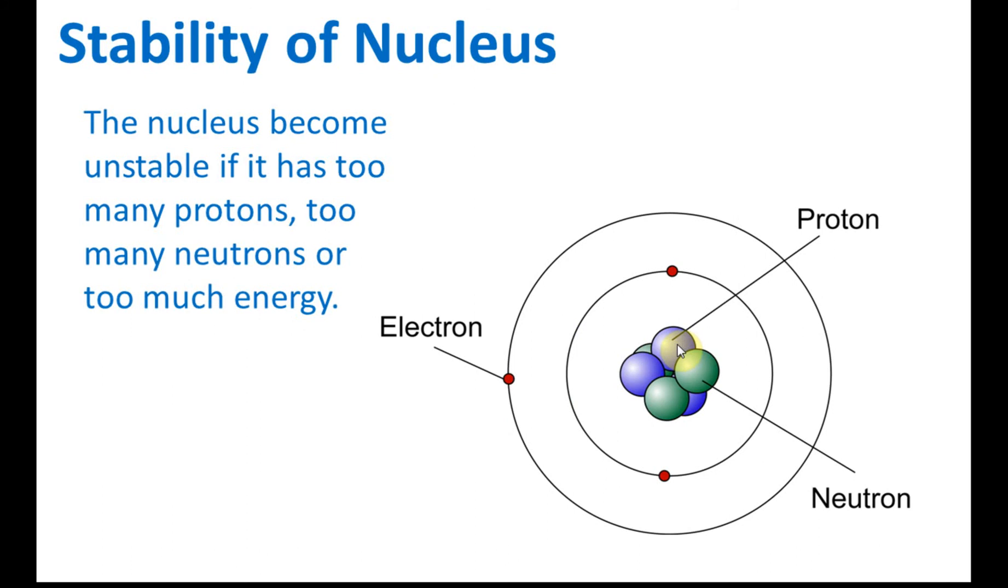The nucleus becomes unstable if it has too many protons, too many neutrons, or too much energy. The protons and neutrons need to be in a certain ratio. If there are too many protons, then it's not stable. Too many neutrons, not stable. But sometimes even too much energy inside the nucleus also makes it unstable.